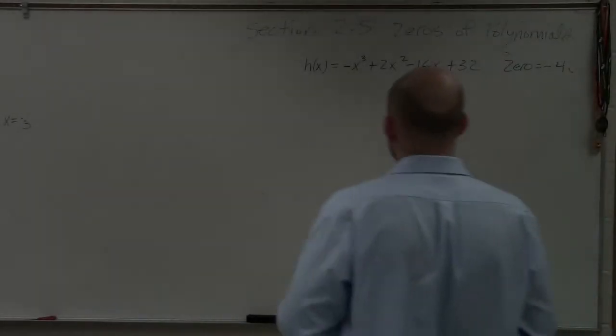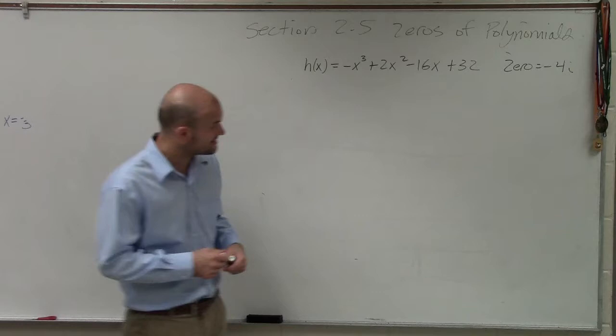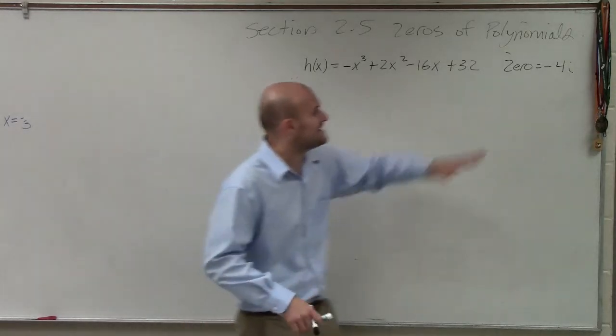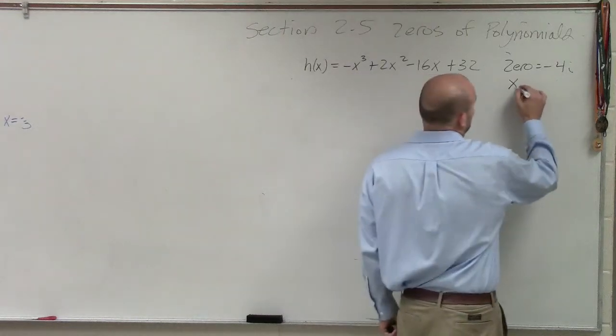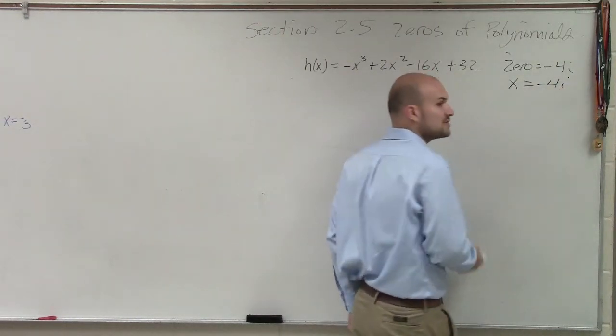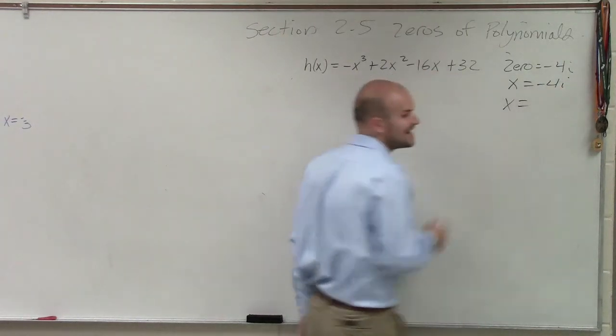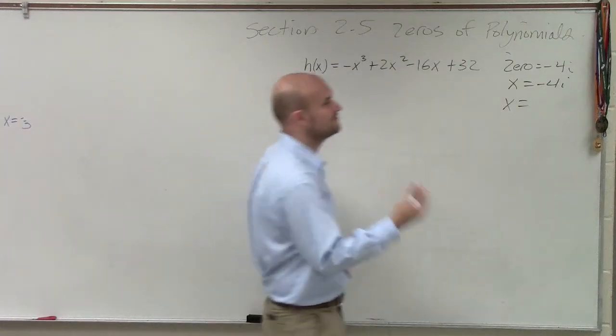So here I have h(x) = -x³ + 2x² - 16x + 32, and they say a zero equals -4i. Just like the last problem, we know that x = -4i is a zero. So if -4i is a zero, then we know that x also equals 4i.